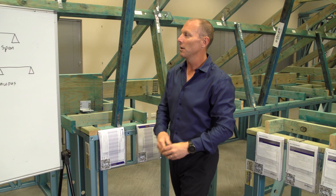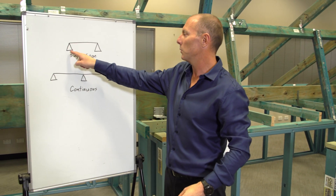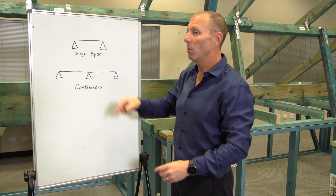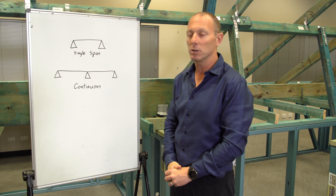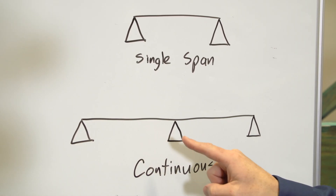The difference is, with a single span, you are just running between two support points, while for a continuous span, you are running between three support points.